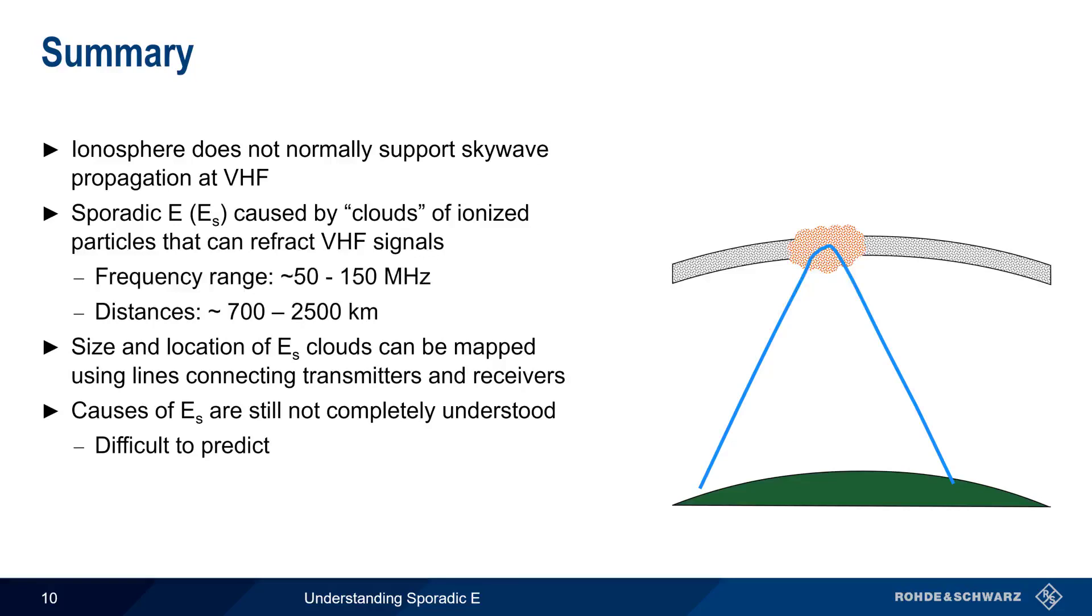The cause or causes of sporadic E are still not completely understood, making sporadic E difficult to predict. And finally, both sporadic E and tropospheric ducting can propagate VHF signals over longer distances, but these phenomena can be differentiated in a number of different ways. This concludes our presentation, Understanding Sporadic E. If you'd like to learn more about other propagation modes, or about Rohde & Schwarz solutions for radio communications, please see the links in the video description.